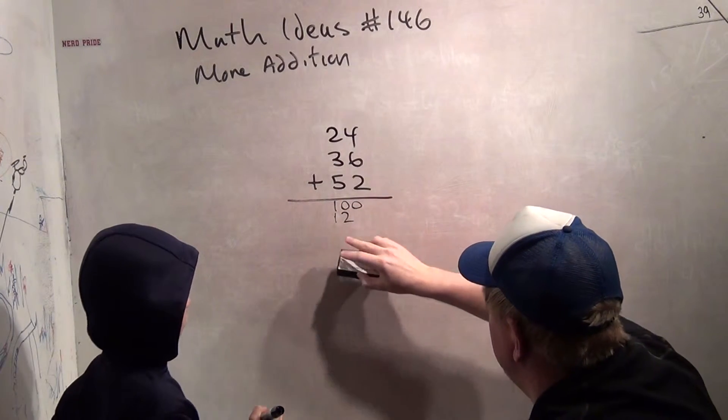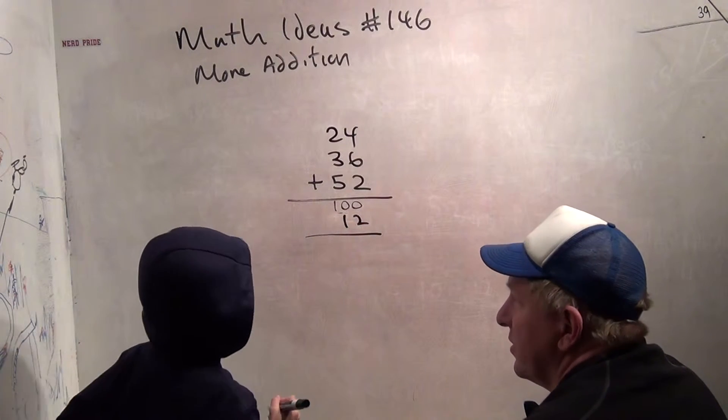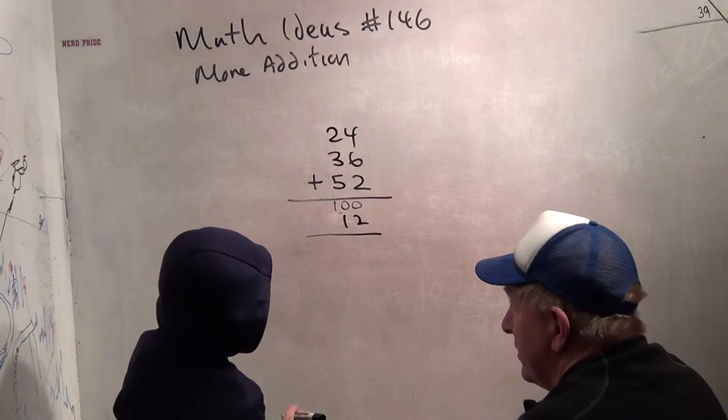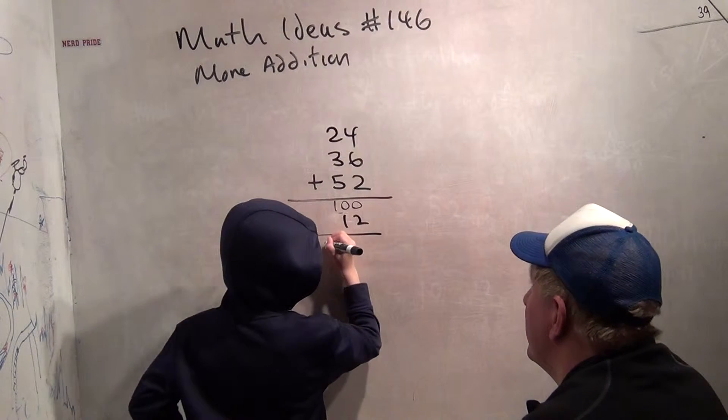No, no, no. Write it like this, if that's 100, that's 12. So you're going to do 100 plus 12, which is 112. Whoa, nobody can stump you.